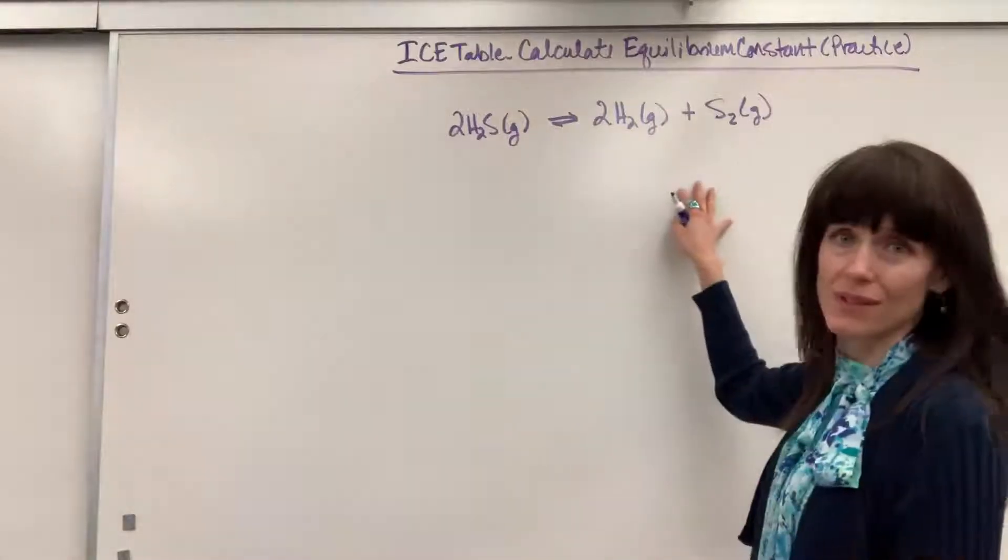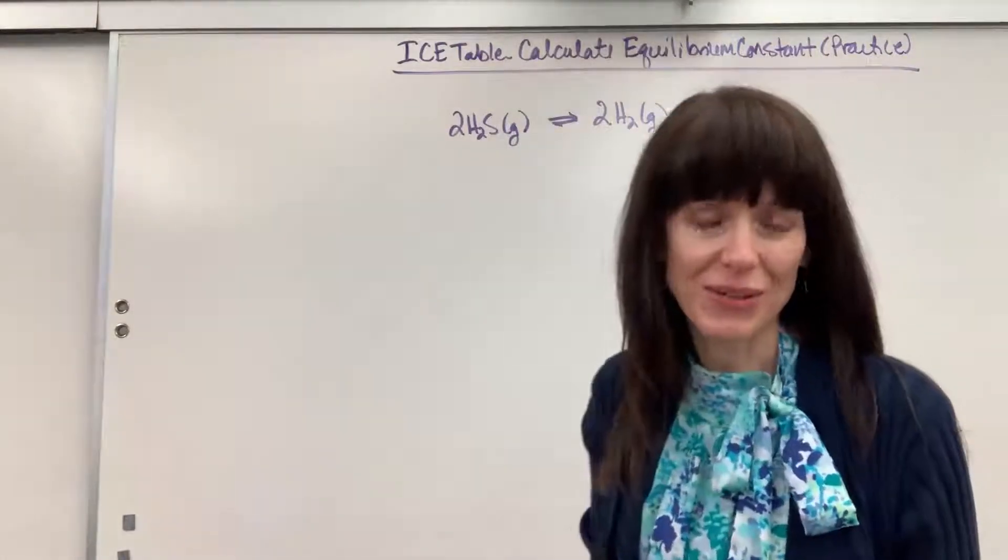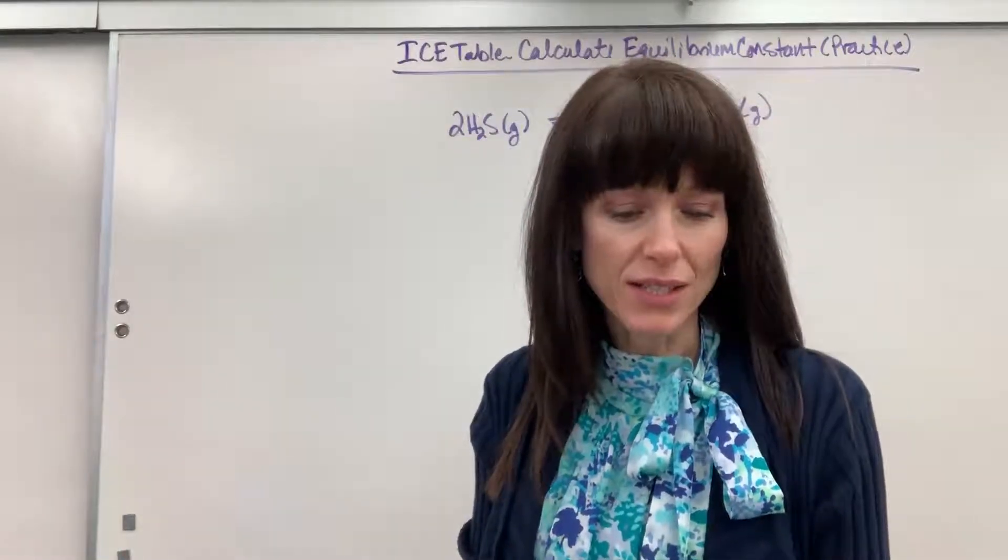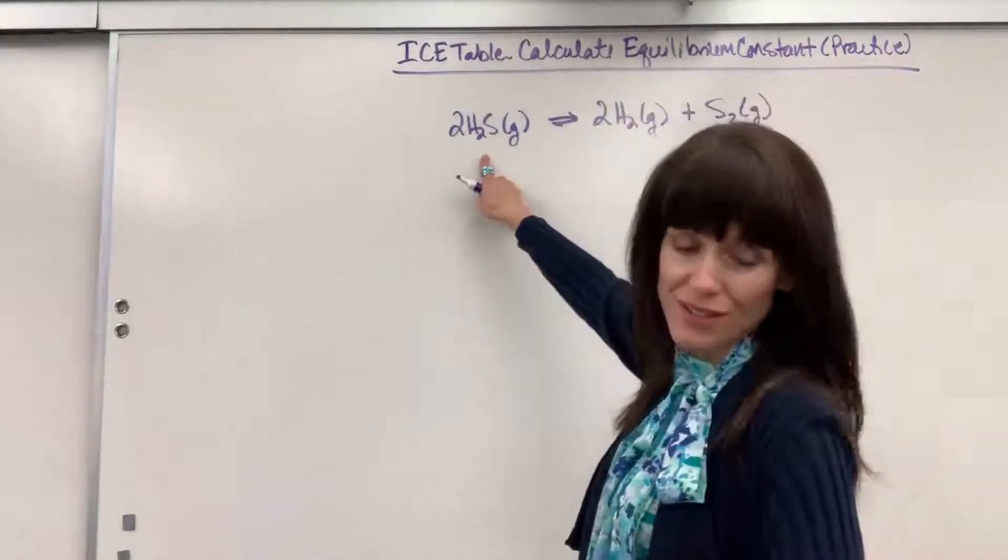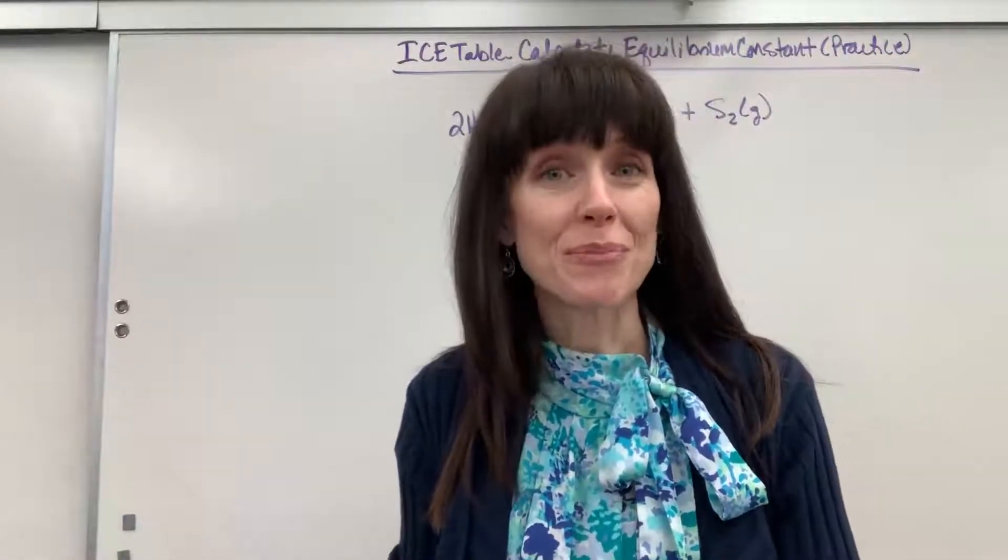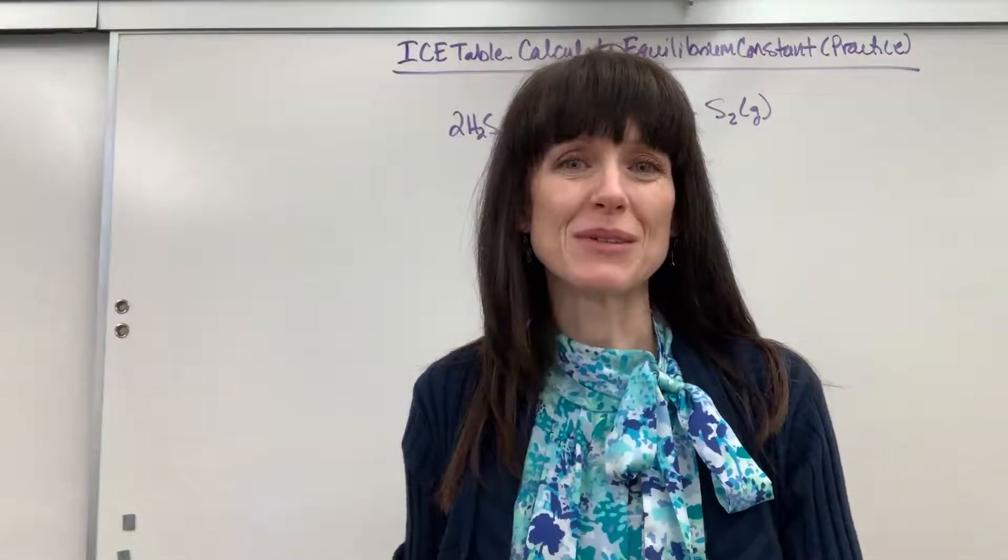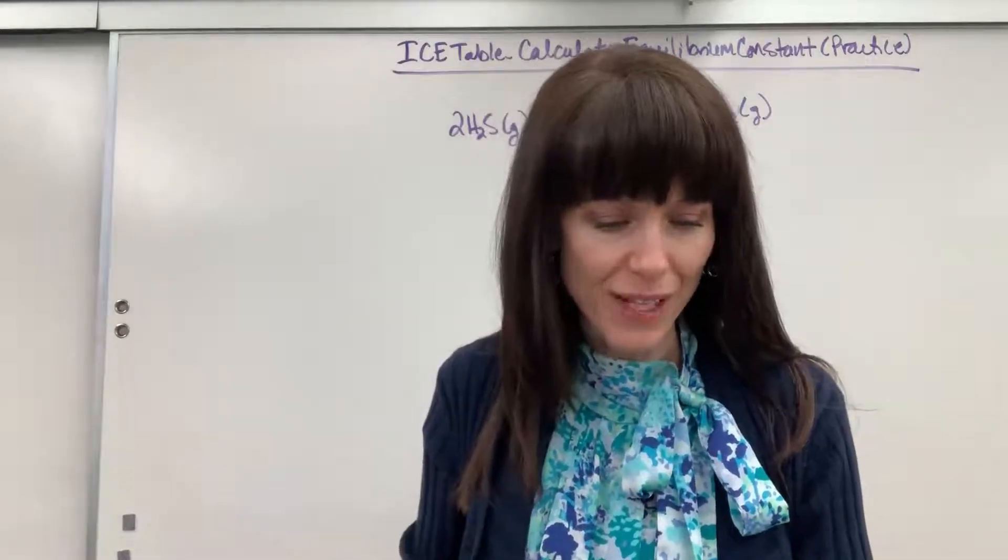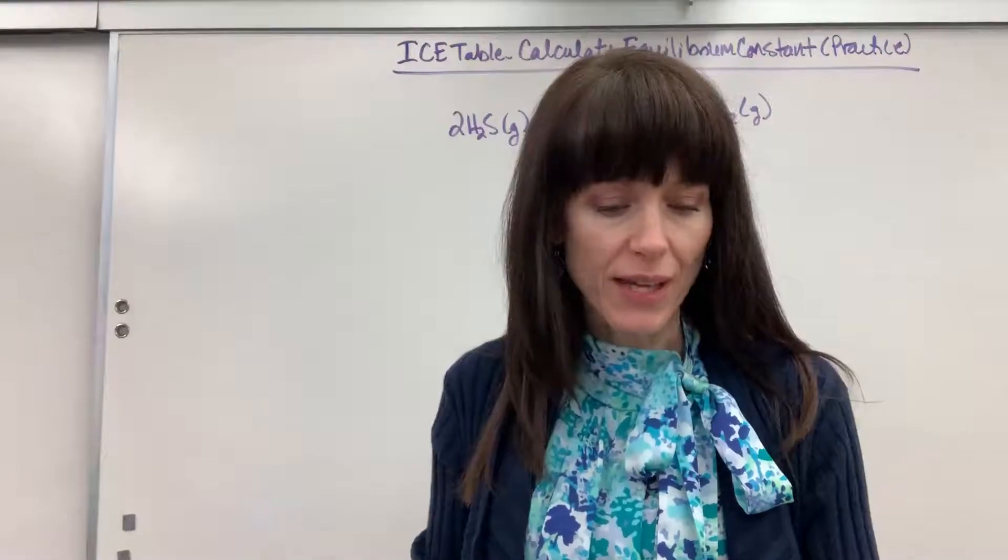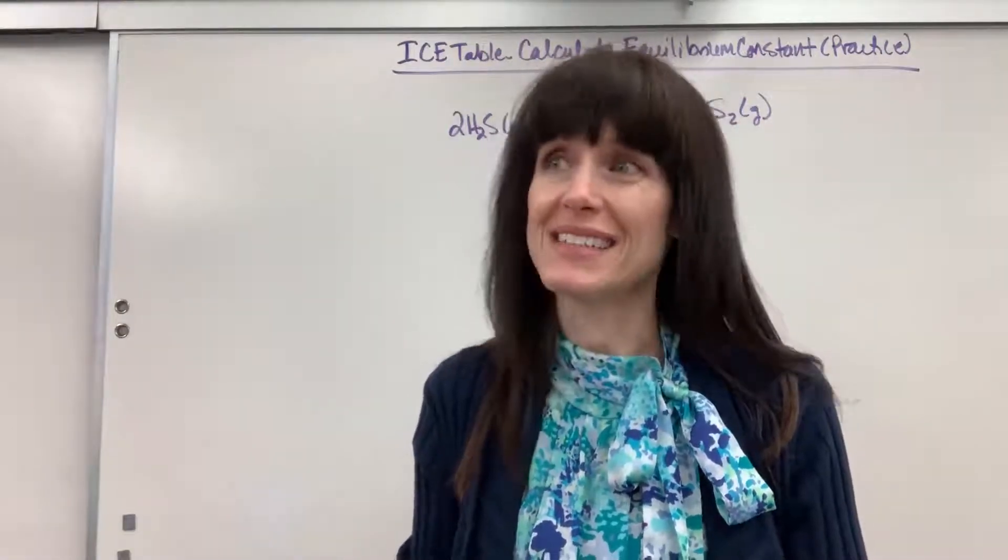So here's my chemical reaction, and let me tell you what they're giving us. It says that suppose the tank initially contains our hydrogen sulfide gas at a pressure of 10 atm. A pressure, so this means we're going to be using our partial pressures at a temperature of 800 Kelvin.